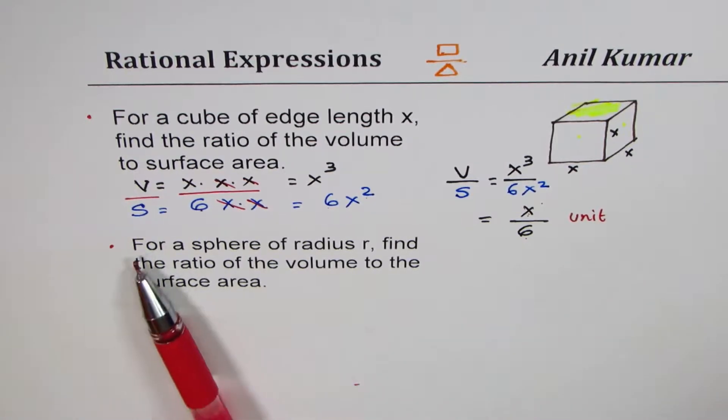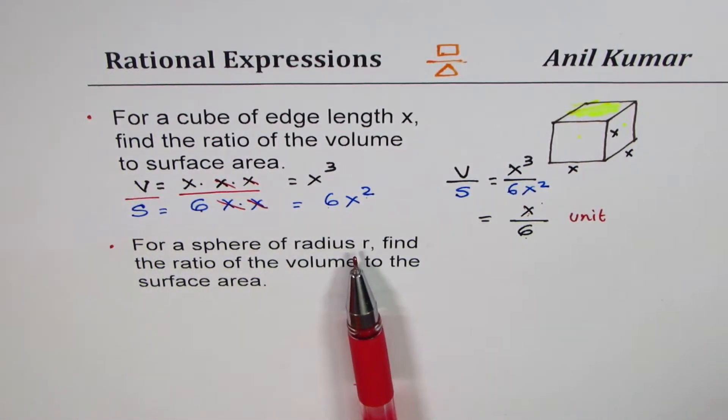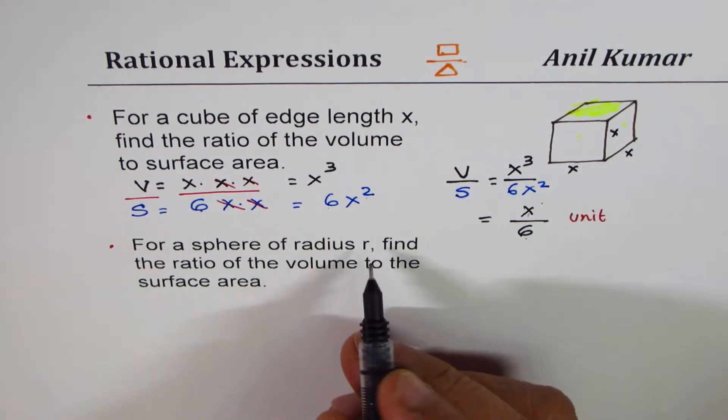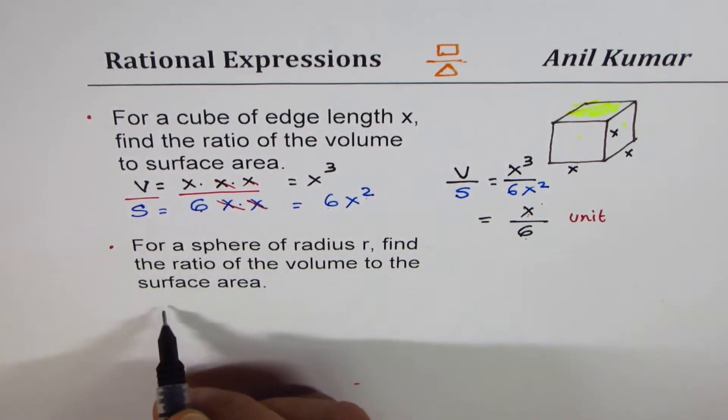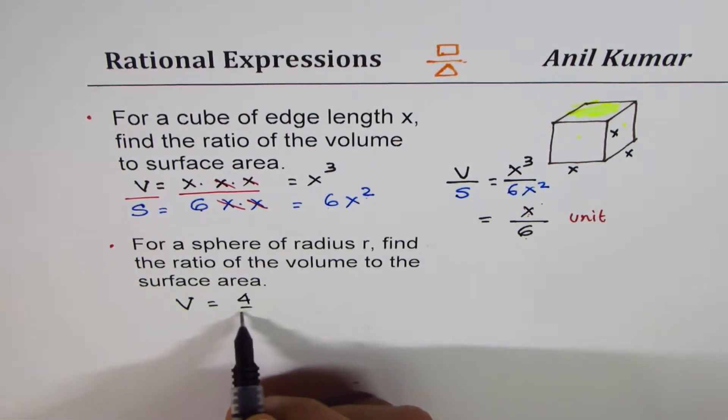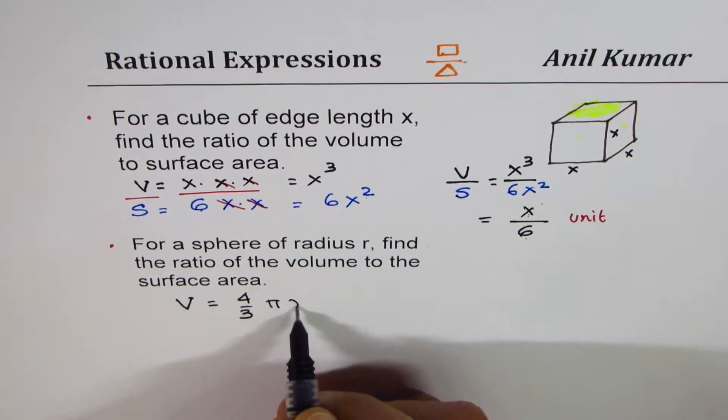Now let's look into the next one. It says for a sphere of radius r, find the ratio of volume to the surface area. Now you should know the formula for sphere volume. What is the volume of a sphere? Volume is 4/3 π r³ where r is the radius of the sphere.